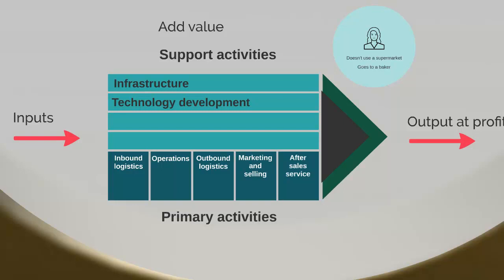Technological development includes ensuring the company is using the best possible machines to do the job, to run the production lines, to store information on computer systems, and IT. Human resources involves ensuring they have a well-rounded HR department that hires the best people, keeps them satisfied and motivated. And procurement ties most specifically to inbound logistics — it's all about relations with suppliers, ensuring they get good prices and good quality materials for production.